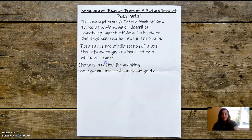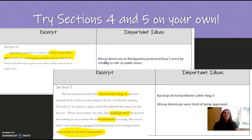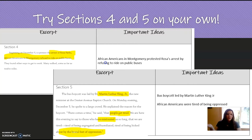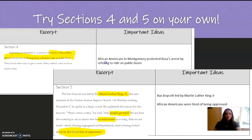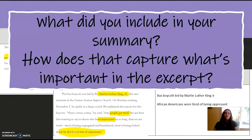We're going to continue this activity. Try sections four and five on your own. Take a look at sections four and five and try those independently. If you want to look at them on paper, you possibly have these in your district packet, if you've picked one up or printed one out, or if you have our notes from the last lesson. What did you include in your summary? How does that capture what's important in the excerpt? Think about whether what you chose really captures the most important ideas.